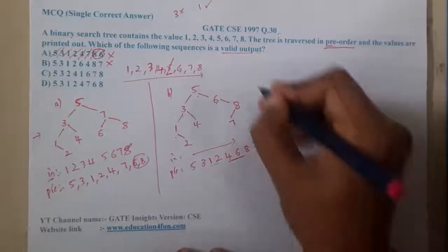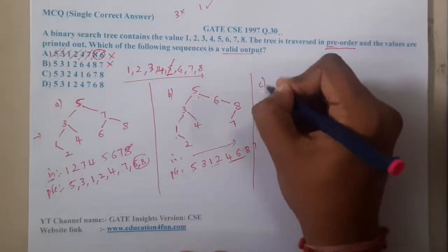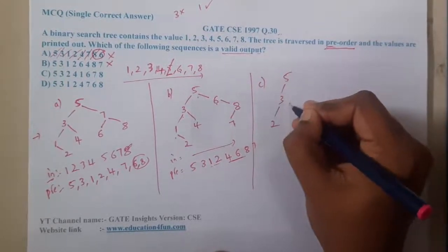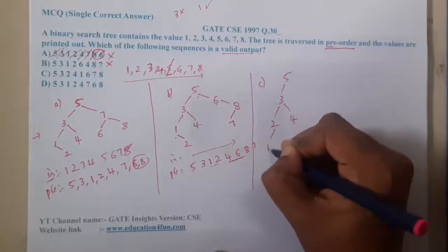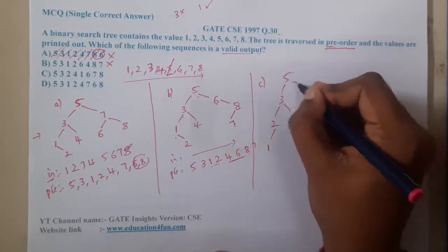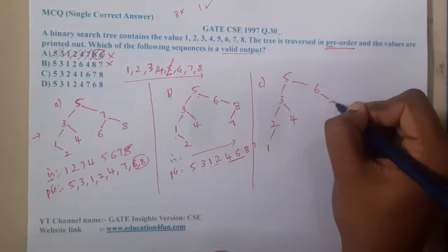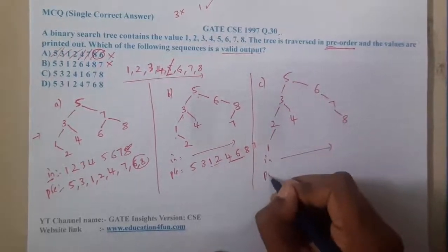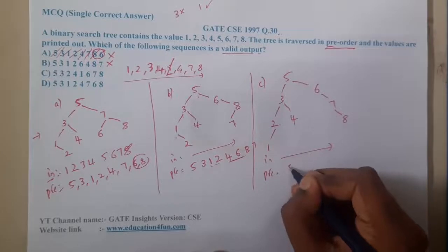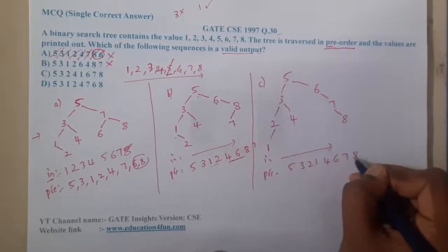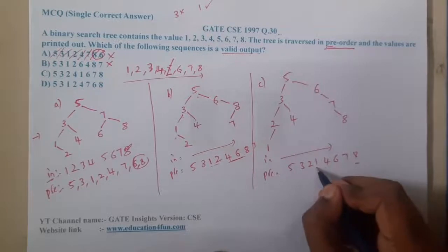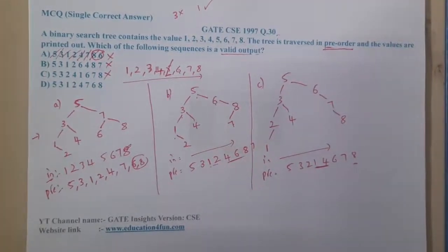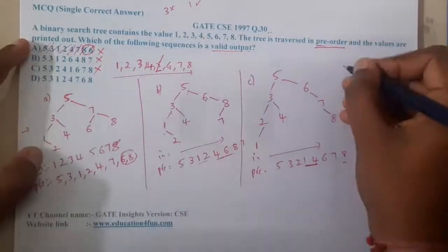Continuing with option C: we have 5, 3, 2, 4, 1, 6, 7, 8. In-order gives the same ascending sequence, but pre-order gives 5 3 2 1 4 6 7 8. The order has been swapped compared to option C, so option C is also wrong.